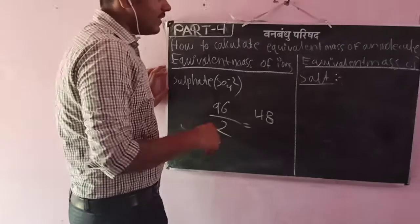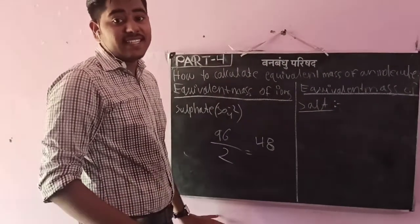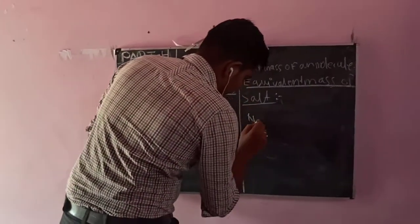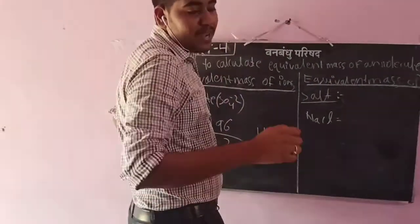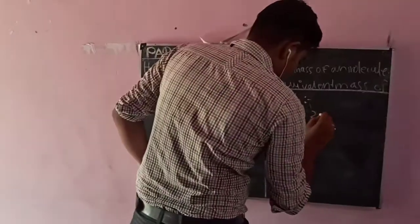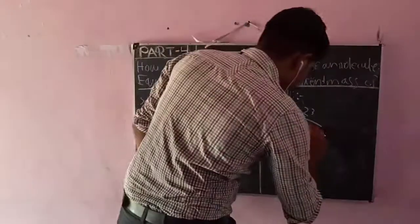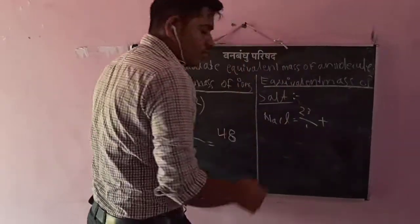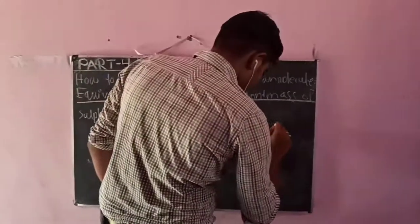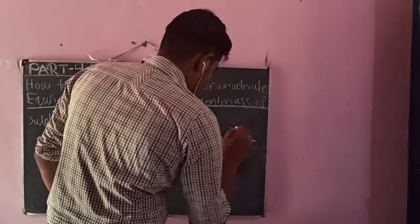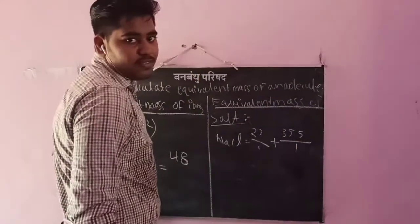Now, equivalent mass of a salt — NaCl. For NaCl: sodium's atomic mass is 23, plus chlorine's atomic mass is 35.5. The valency is 1. So the equivalent mass of NaCl is 58.5.